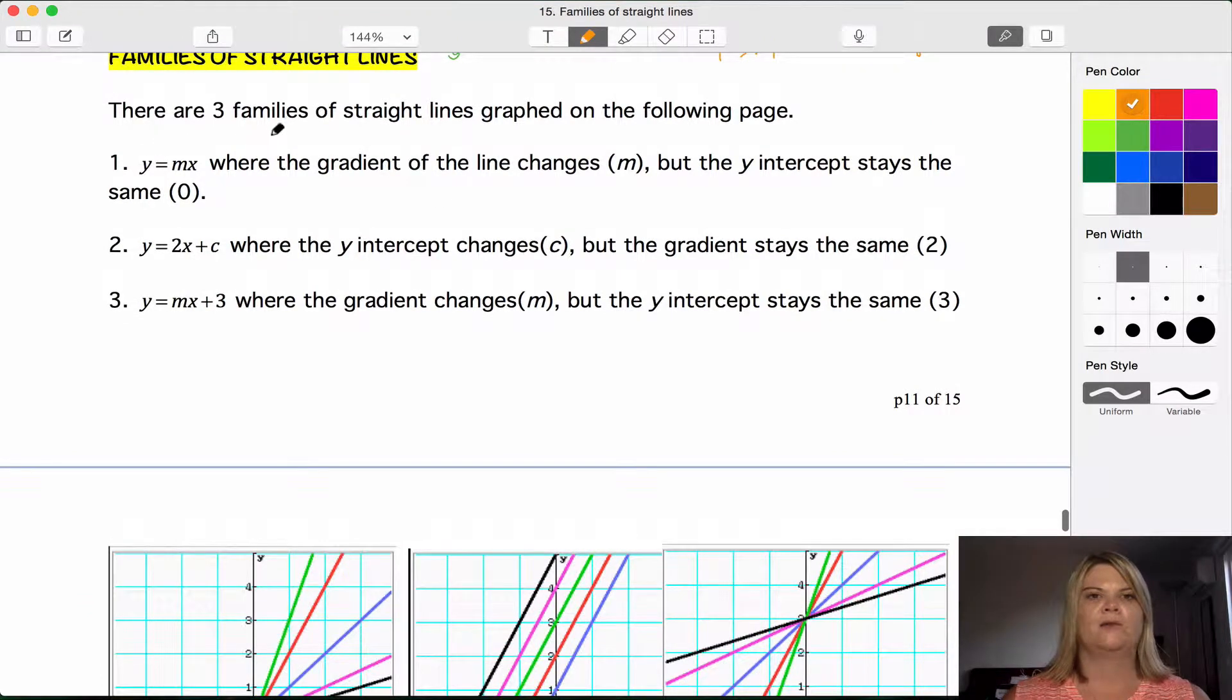I've put three different families on the three different graphs here. The first one is y equals mx, where the gradient of the line changes, so m could be 1, 2, a half, 100, whatever, but the y intercept stays the same because there's nothing on the end there.